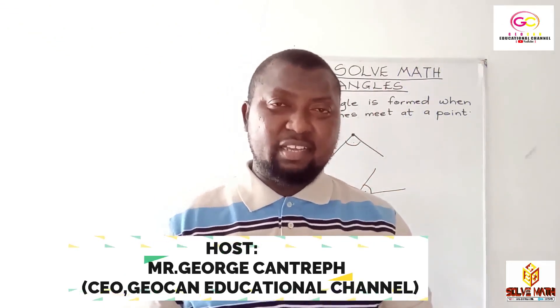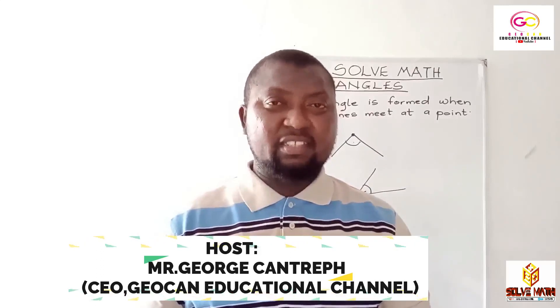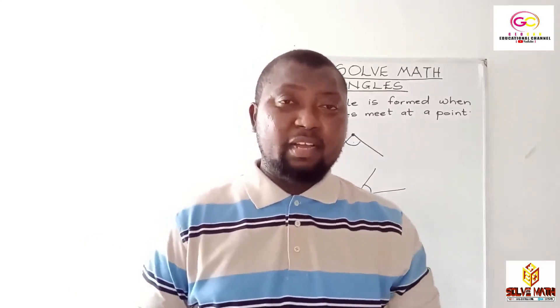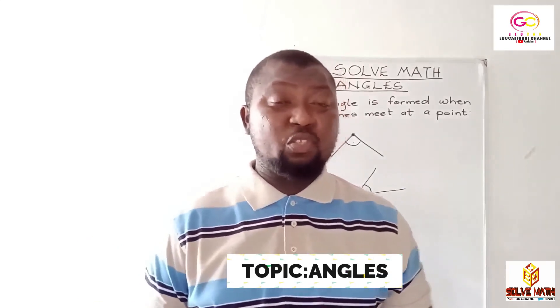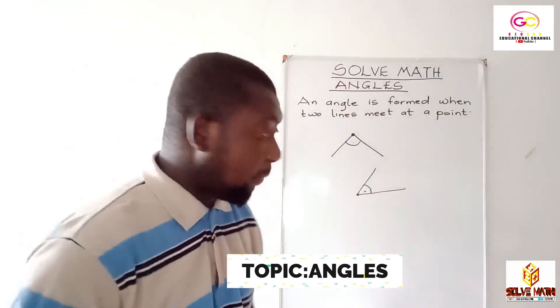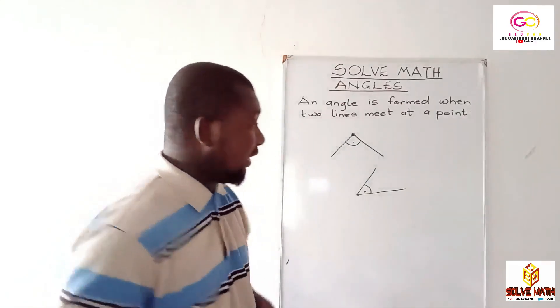Yes, as I said in earlier stages, an angle is formed when two lines meet at a particular point. So easy. We'll just draw two lines to meet at a particular point, then you get an angle.